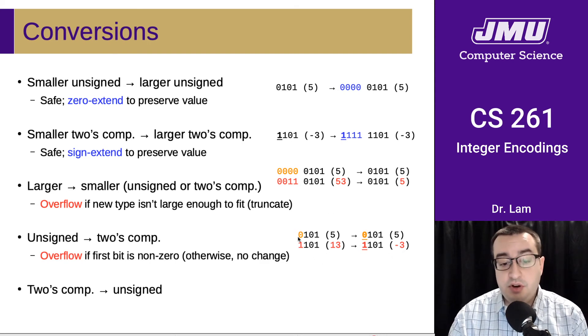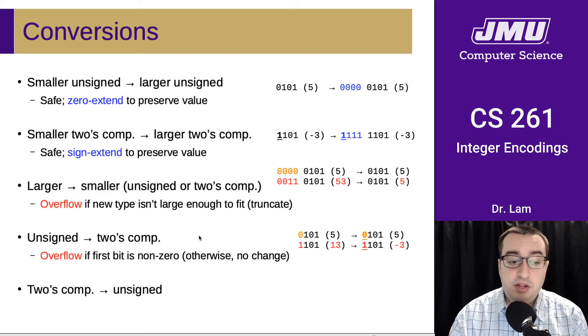Some numbers are safe, right? So for instance, five is safe. In particular, we know it's going to be safe if that first bit is not set, right? So if this was a positive number, a small positive number in the unsigned representation, it's still going to be a small positive number in the two's complement representation.